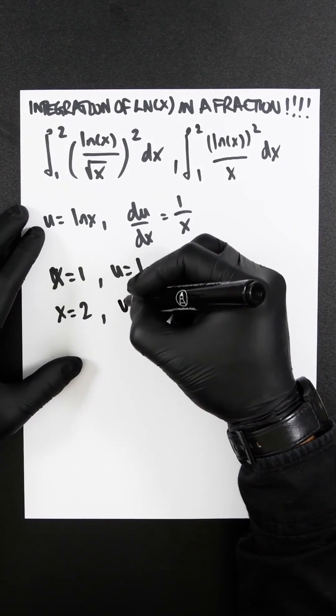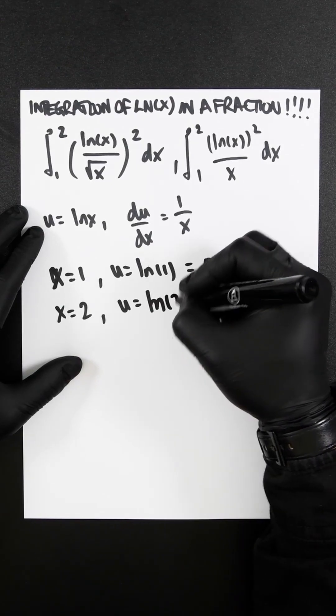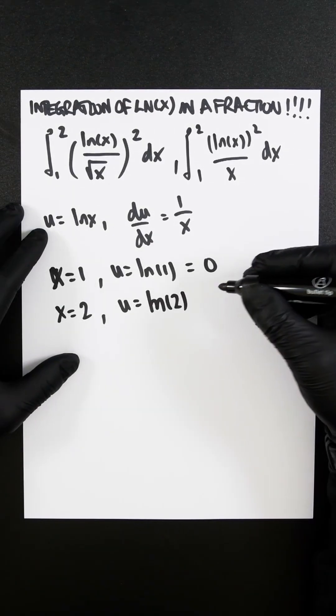When x is 2, u equals ln 2, which is just ln 2.